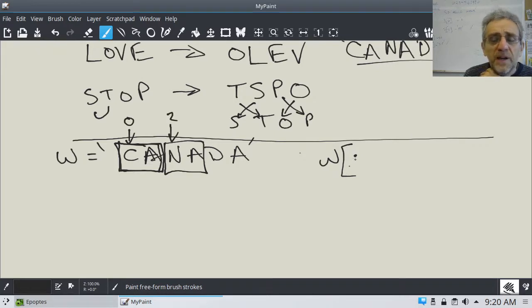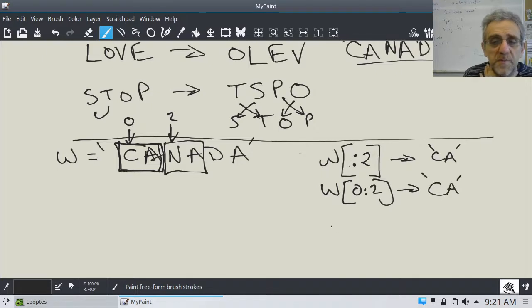So, in other words, this is index zero, and this is index two. So, perhaps not a good idea to leave it off. Although, you know, this would work. This is going to give us CA. But so is this. Now, why would this one be better?